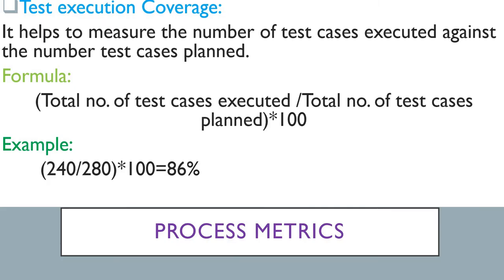Next is test execution coverage. After test design coverage, it's time to know your execution coverage. It helps to measure the number of test cases executed against the number of test cases planned. Sometimes you are not able to execute all test cases for different reasons — it could be blocked, you don't have enough testing data, or your environment was not set up. The formula is: total number of test cases executed divided by total number of test cases planned, multiplied by 100. For example, 240 executed out of 280 planned gives a test execution coverage of 86%.